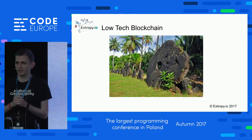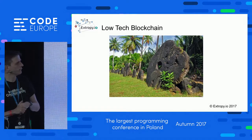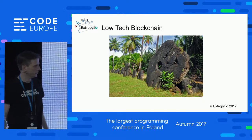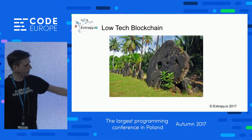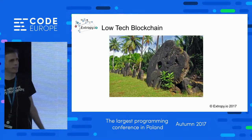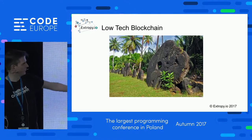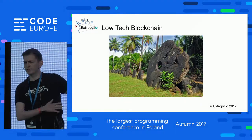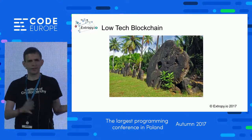Let's look at an example of a low-tech blockchain. It's an example of a currency used by an island in the Pacific, a few hundred years ago. They used to have these large stones as coins. Obviously you can't carry these things around — they are huge. The general idea would be that you'd have one of these set up outside your house, representing that you had some value.